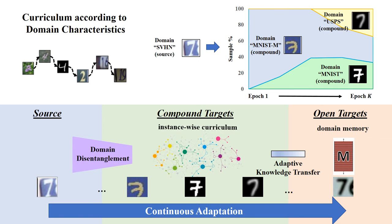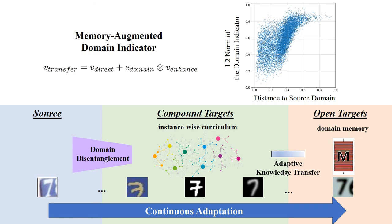We use the domain factors to determine the curriculum based on sample distances to the source domain. For example, in the early epochs the model is mostly adapting to MNIST-M. Then harder domains are gradually added. We also use the domain factors to learn an indicator that controls knowledge transfer. When the sample is far away from the source domain, the indicator tends to have larger norms so that the memory can have larger weights.